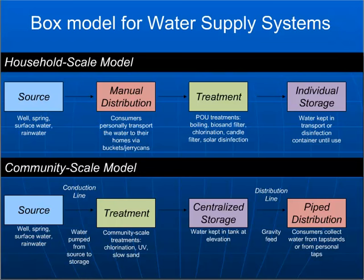For the community scale model, things change a little bit. From the source, water is pumped or drawn via conduction line into a storage tank. Within the storage tank, treatment typically occurs — systems such as slow sand filtration, UV chlorination. From there, it's kept in the storage tank at elevation until needed, at which point it flows through the distribution line and is gravity-fed to the consumer, collected from tap stands or personal taps.